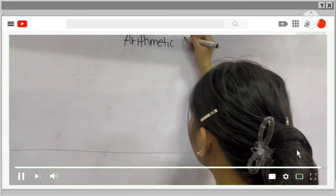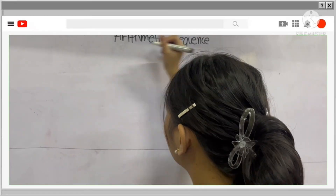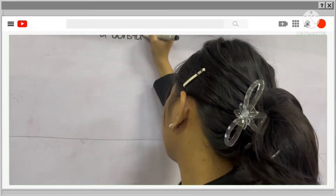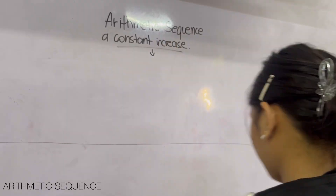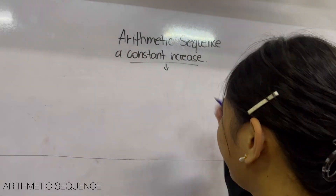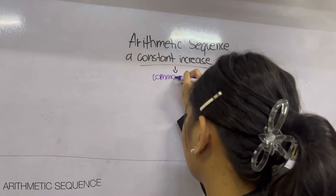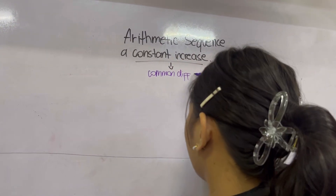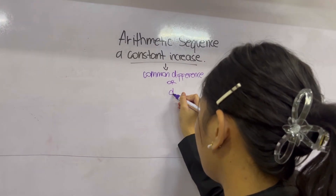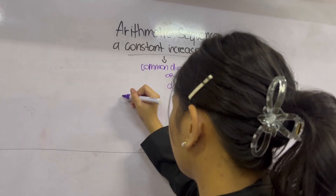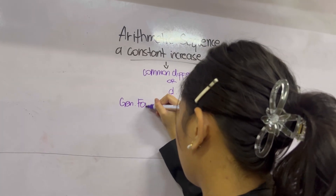First of all, we have the arithmetic sequence. The arithmetic sequence is a constant increase, and that constant increase is called the common difference, or it can also be symbolized by the letter D. Its general formula is: A sub n is equal to A sub 1 plus (n minus 1) times D.